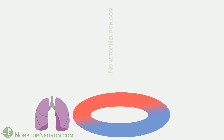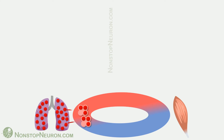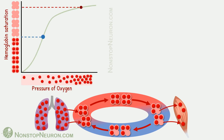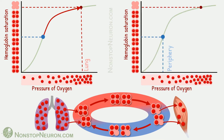Here we have lungs, blood vessels, and peripheral tissues. At the lungs, hemoglobin loads oxygen, goes to the periphery, releases some oxygen, and comes back to the lung to load more oxygen, as we have seen in the first video. At the lungs, partial pressure of oxygen is high, so loading of oxygen increases hemoglobin saturation. And at peripheral sites, partial pressure of oxygen is low, so oxygen is released and saturation decreases.